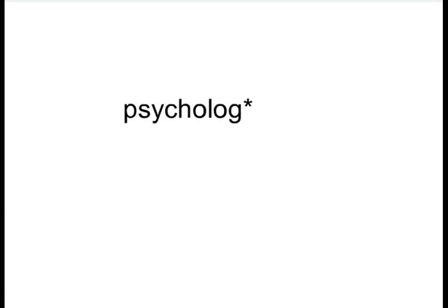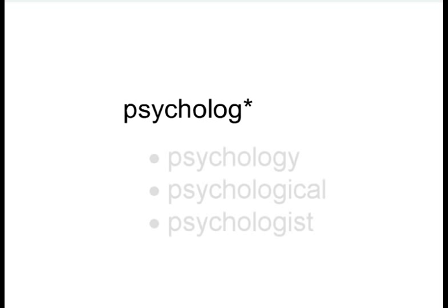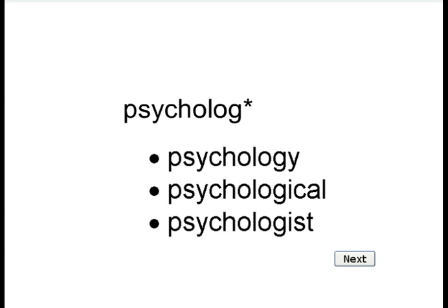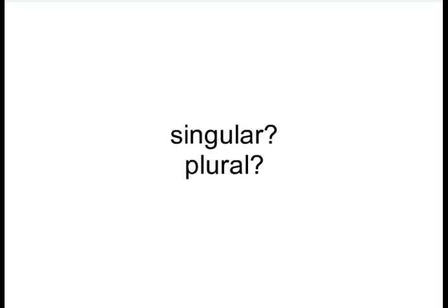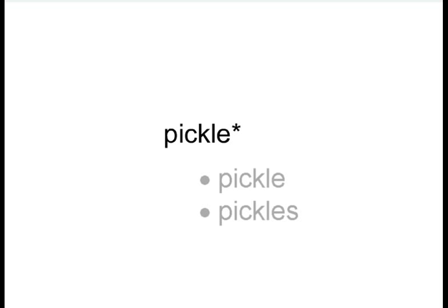Now let's take a look at how truncation works. If I type in psychology asterisk, the library catalog would return a list of books with the words psychology, psychological, and psychologist in the title or description of the book. This little symbol saves me from having to try out all those different variations. Truncation is also useful if I don't know whether an author may have used the singular or plural form of a word. For example, if I type pickle asterisk, the catalog will return all the books with pickle or pickles in the book's title or description.